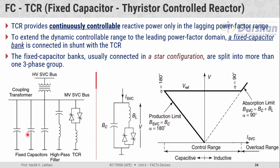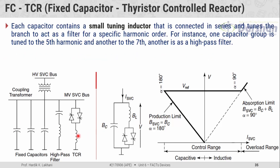The fixed capacitor banks are usually connected in star configuration and are split into more than one three-phase group. In the equivalent circuit diagram, one branch represents the net susceptibility offered by all capacitive branches, and the other branch represents the susceptibility offered by the inductive branch. Each capacitor contains a small tuning inductor connected in series that tunes the branch to act as a filter for a specific harmonic order — for instance, one capacitor group is tuned to the 5th harmonic, another to the 7th, and another as a high-pass filter.